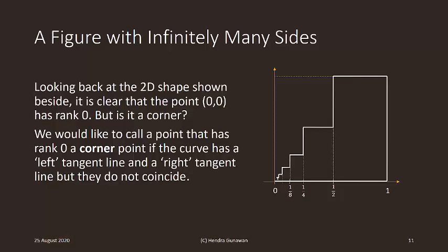Looking back at the 2D shape shown beside, it is clear that the origin has rank 0, but is it a corner? We would like to call a point that has rank 0 a corner if the curve has a left tangent line and a right tangent line, but they do not coincide.